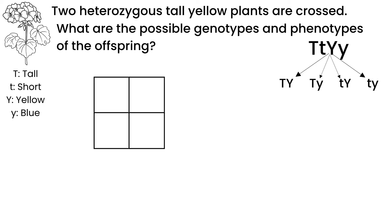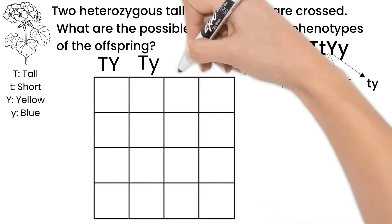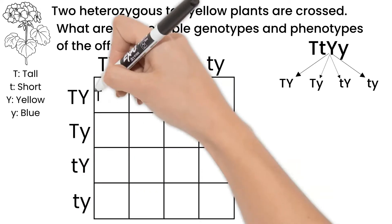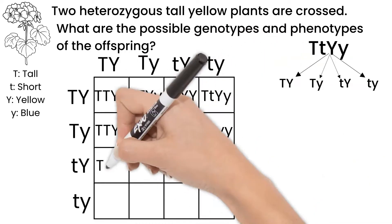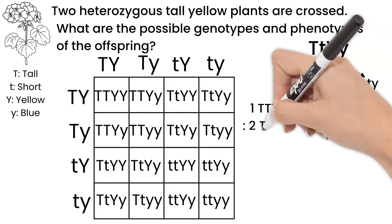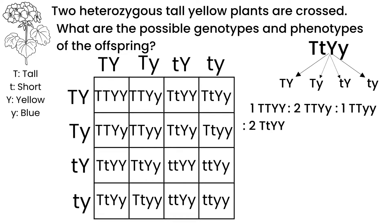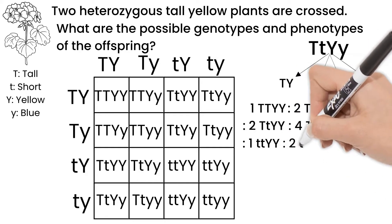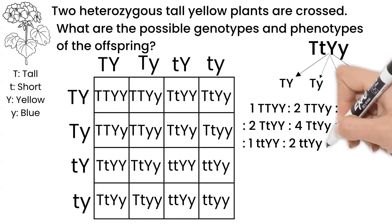Our Punnett square is going to be a lot bigger to account for all these possible gametes. Even with a bigger Punnett square, you still match them up the same way. Once we do this, our possible genotype ratios are: one homozygous dominant for both T and Y, two homozygous dominant T heterozygous Y, one homozygous dominant T homozygous recessive Y, two heterozygous T homozygous dominant Y, four heterozygous T heterozygous Y, two heterozygous T homozygous recessive Y, one homozygous recessive T homozygous dominant Y, two homozygous recessive T heterozygous Y, and one homozygous recessive for both T and Y.